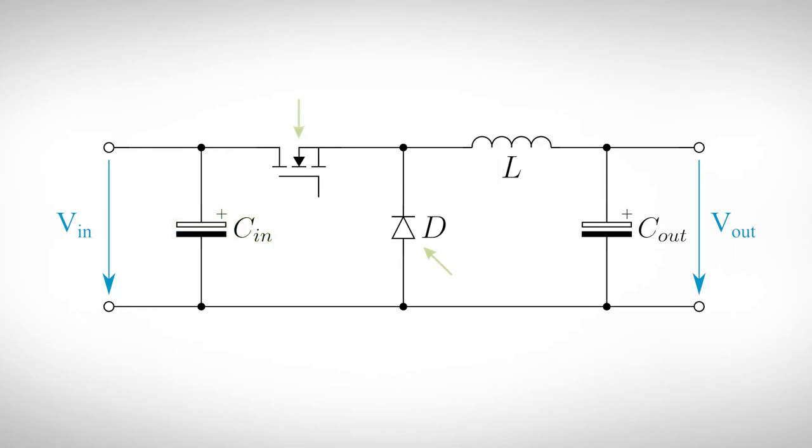After that, there are two switches: a MOSFET and a flyback diode. The inductor and the output capacitor complete the circuit. They are needed to supply the load during the off time of the transistor.